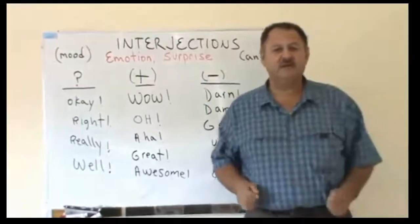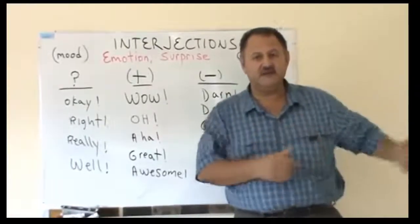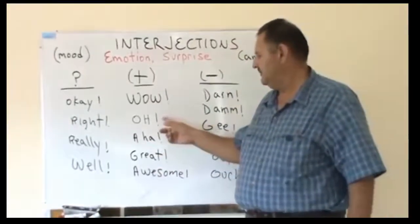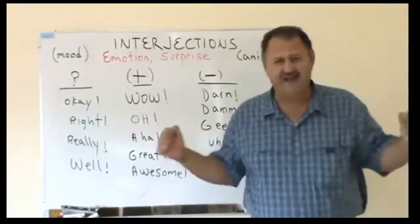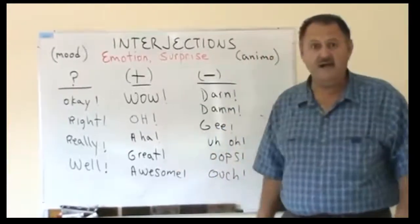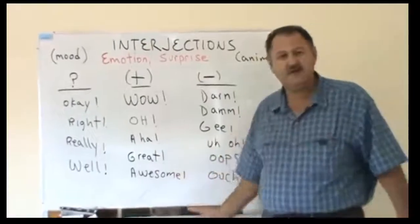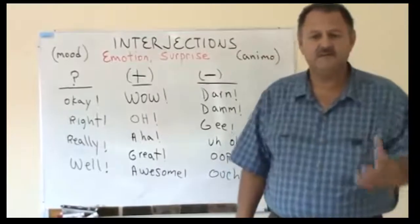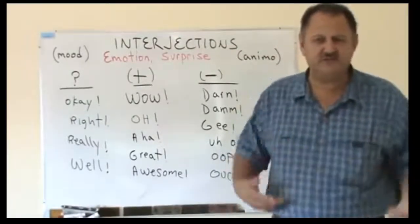The interjection marks the tone of the next expression or sentence. For example: 'oh, you won the lottery!' 'outstanding!' 'fabulous!' 'aha, so you won the lottery!' 'great!' 'awesome!' These are all positive interjections.